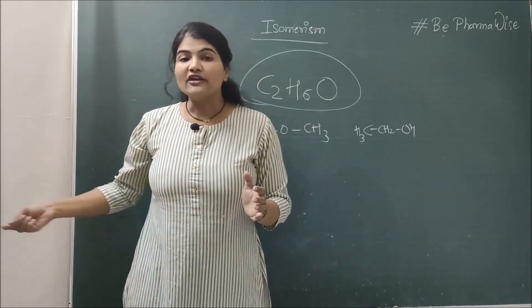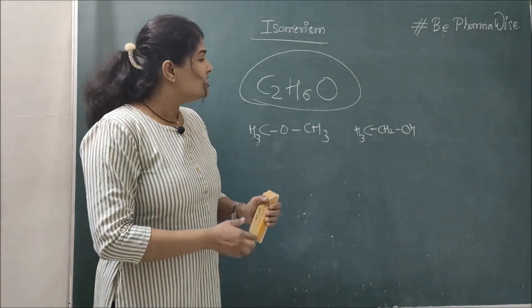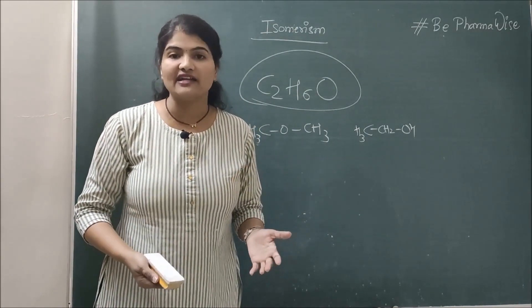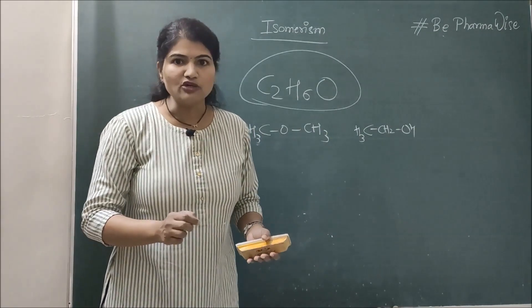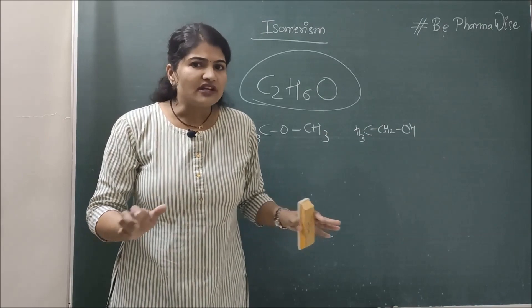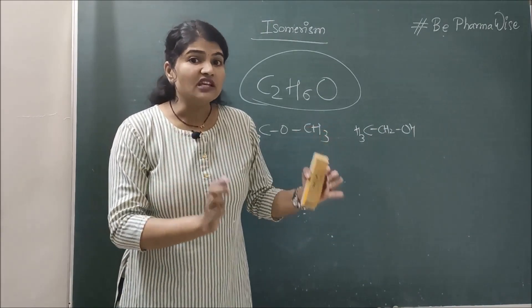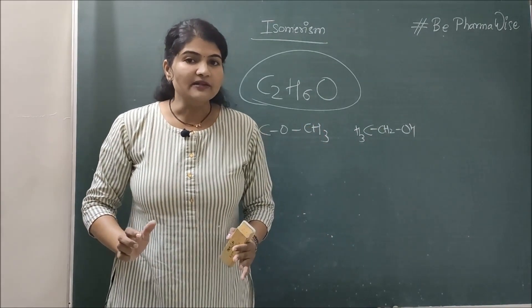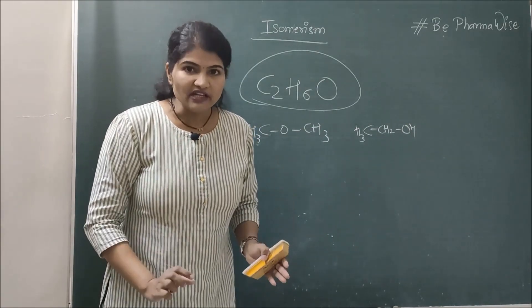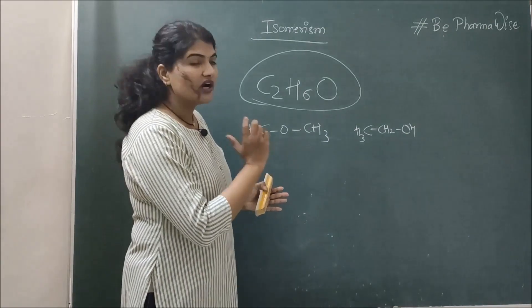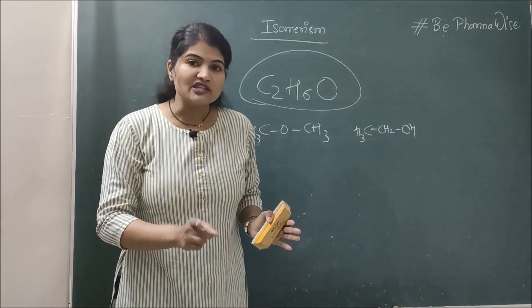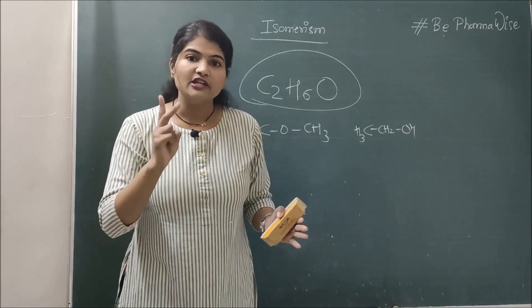Now, why does isomerism happen? It happens basically due to different arrangement of atoms. Arrangement of atoms can be of two types: first, without reference to space within the molecule, and second, with reference to space — meaning the three-dimensional arrangement. So depending on how you arrange the atoms from the same set, isomerism is divided into two parts.